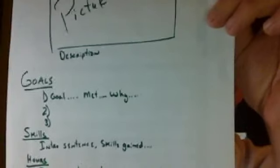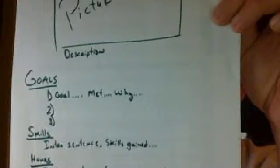Underneath the picture, add a little description of what the picture is. Then we move to Goals. We've talked about goals a lot — about 50% of you have good SMART goals. You'll list your three goals, all of which should be SMART. If you've lost points because they're not SMART, change them now so you get full points. Identify if the goal was met and then explain why.